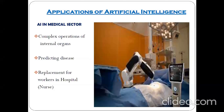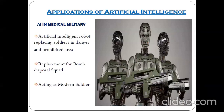Robots have no emotions, so they can perform operations more precisely and correctly. Other applications include predicting expertise and replacement of workers in hospitals — for example, during COVID some hospitals deployed robots to serve patients, replacing nurses who were at risk of infection. This is a great application of AI in the medical field.